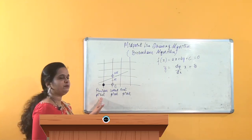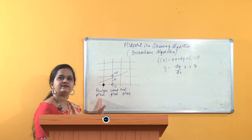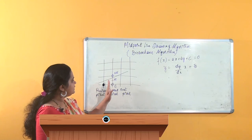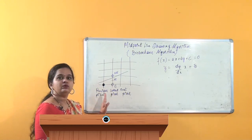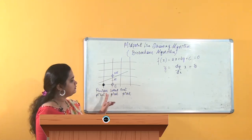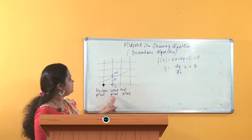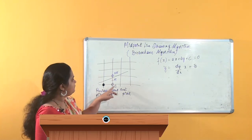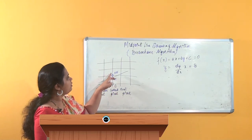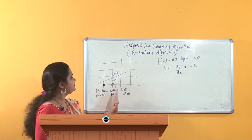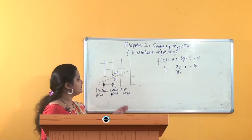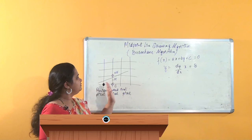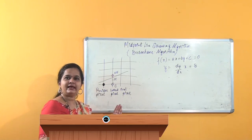Here you can see the previous pixel — meaning where I started — and the next pixel, which is the current pixel I want to draw now. The current pixel has to be decided: is it going to be the E or the NE pixel? Then, when I move to the next pixel again, I have to decide whether I am going to select this pixel or that pixel.